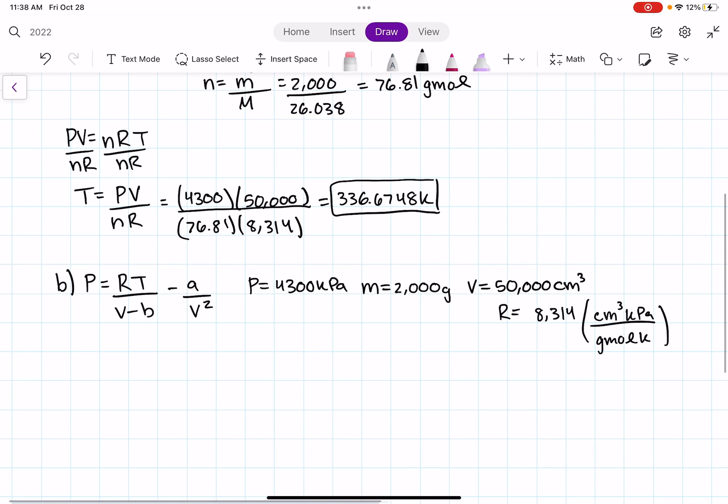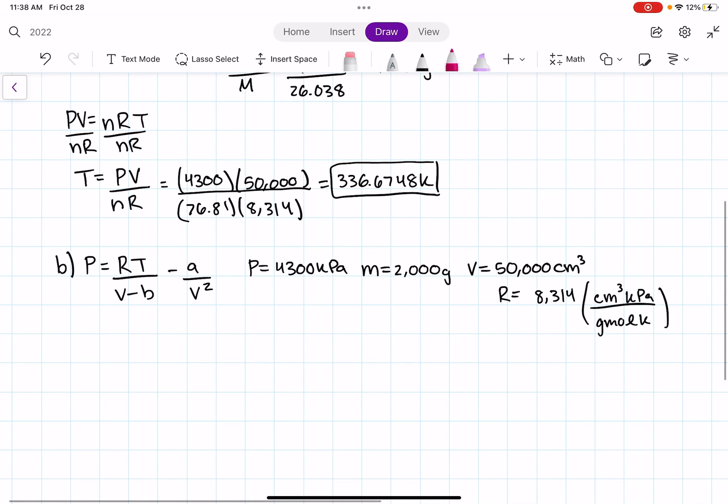I think this is all the information they gave us in the problem. So let's go ahead and check what we have. We have the pressure. We have R constant. We're looking for temperature. And we need not volume, but molar volume. We're not given molar volume, but we can find it. Because molar volume is volume over moles.